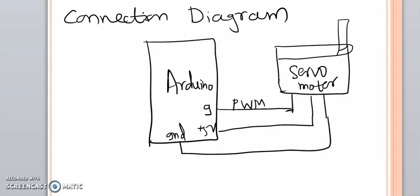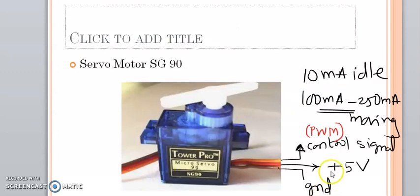Welcome to part C of practical number 6, that is servo motor control using Arduino. In part B we have seen the connection diagram to connect the servo motor to Arduino. The three pins that need to be connected are the control signal, supply voltage, and ground. This control signal must be a PWM signal, as we have discussed in our previous session.